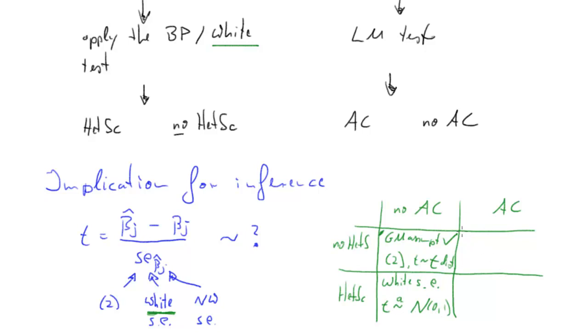Now let's go to the next case, this guy here. We have autocorrelation, but no heteroscedasticity. Which standard errors are we going to use? We will use the Newey-West standard errors. And our t-test, how is it distributed? Again, it is standard normally distributed, but only for sufficiently large samples.